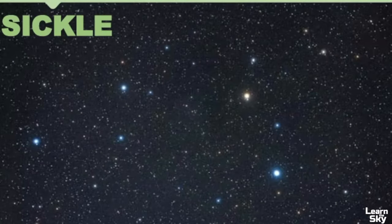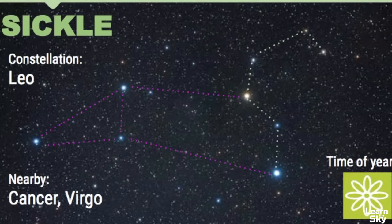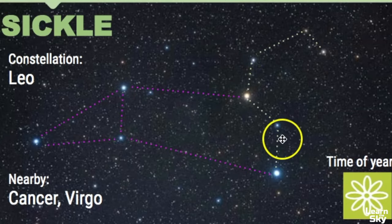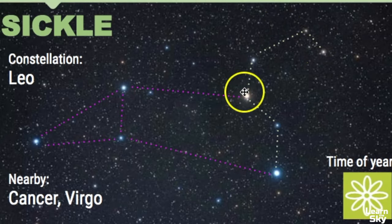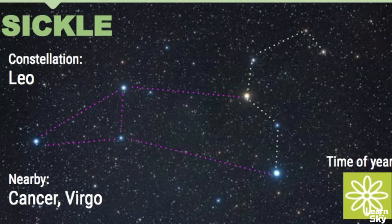Our next asterism is called the Sickle, and it resembles that tool we often use in agriculture to cut things down. This asterism is located in the constellation of Leo. This is one version of what Leo looks like in terms of its star pattern. Remember that constellations can vary depending upon source, but the nearby constellations are Cancer and Virgo. It's really easy to point out Leo because of this asterism. Sometimes I also tell my students it looks like a backwards question mark — that's another way to help you remember it.